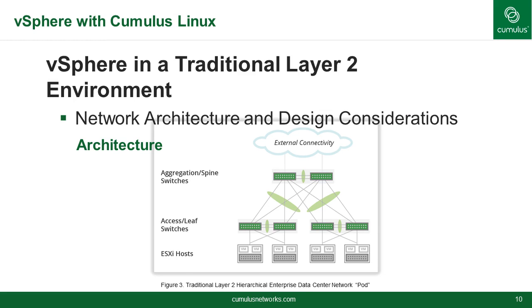Let's go over an example for vSphere in a traditional layer 2 environment. Here's an example of a classic architecture where you have two spine switches, four access-leaf switches — the details of specific models may vary — but the access-leaf switches provide dual-home connectivity to ESXi hosts and storage elements. This is very simple, and larger deployments will scale up, as we'll cover later.